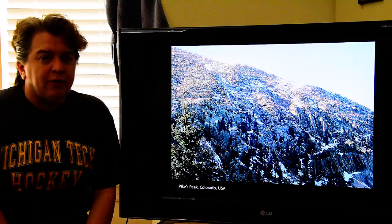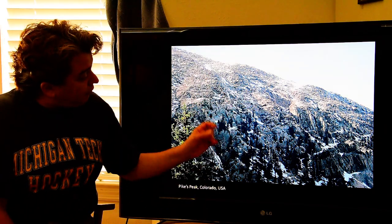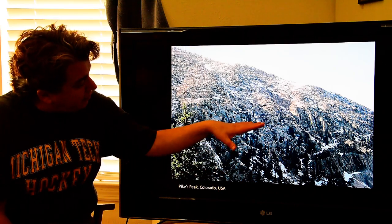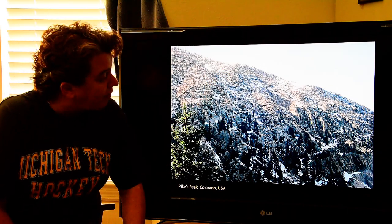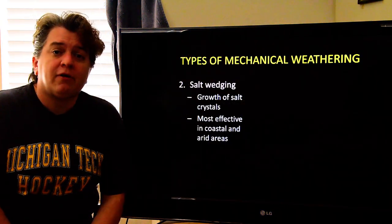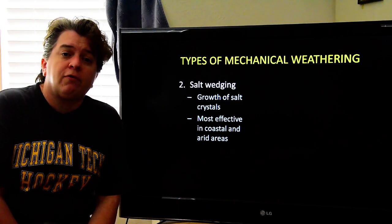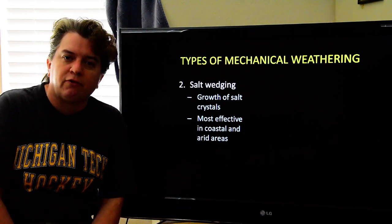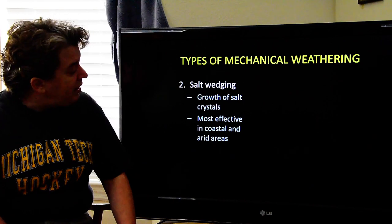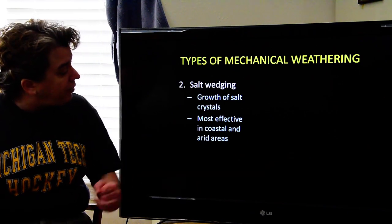Before moving on, I just wanted to show you some of the effects of frost wedging. Notice the rocks down here look fairly solid, while the rocks up here look more jumbled and broken apart — part of that is frost wedging. Now, very similar to frost wedging is salt wedging. Except in this case, instead of a crystal of water growing in a little opening in the rock, we have a salt crystal growing. As the salt crystal grows, it exerts a force on the rock and slowly starts breaking it apart.